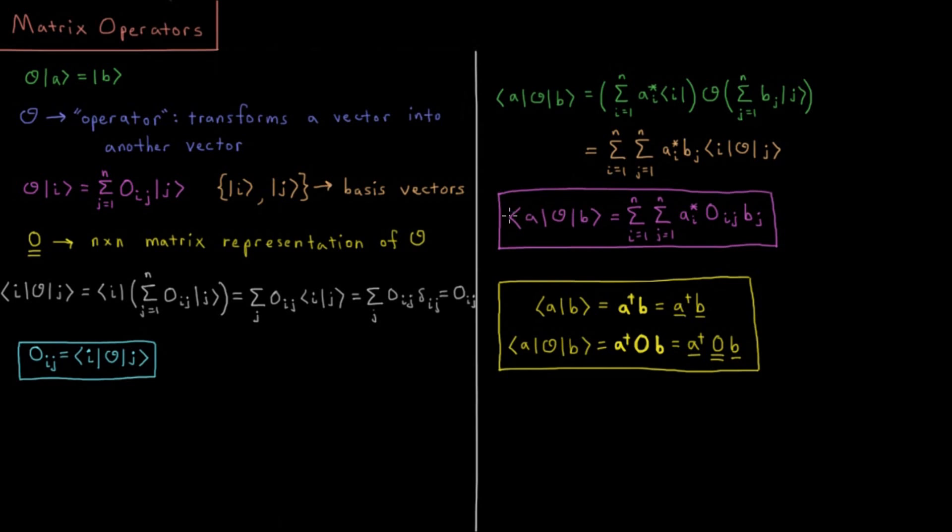If we want to know the result of O acting on ket vector b and the resulting vector in a bra ket, this matrix element we can get as being equal to a sum from i equals 1 to n, sum j equals 1 to n, a star i, o, i, j times b sub j.